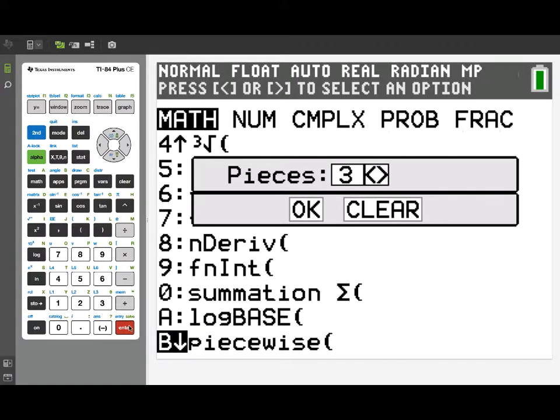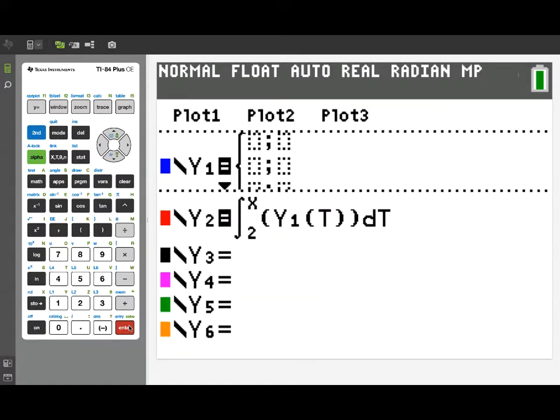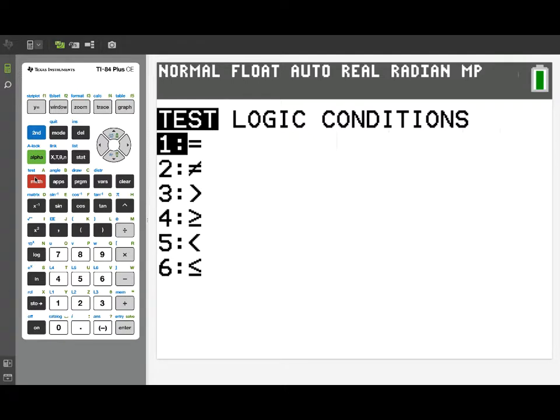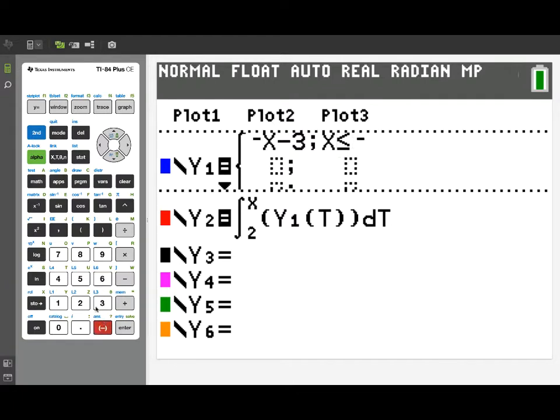After selecting that, it gives me a choice of how many pieces I would like to my graph. I'll stick with three and just press OK. Notice it gives me a template where I can enter the three formula pieces and the domain for which those formulas will hold. I'll make the first piece have the formula negative x minus 3 and that's going to be valid for x less than or equal to negative 2. Now to get the less than or equal symbol, I'll go to the test menu and there I find all my inequality symbols. Number 6 is less than or equal and I'll put in negative 2.